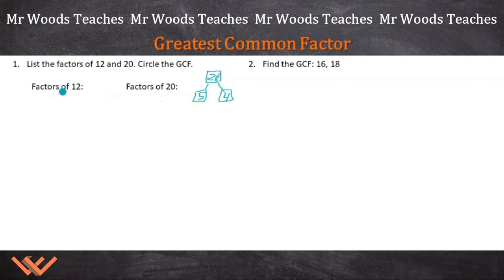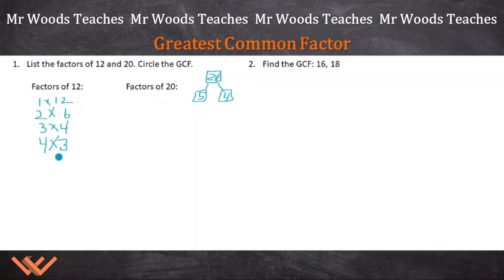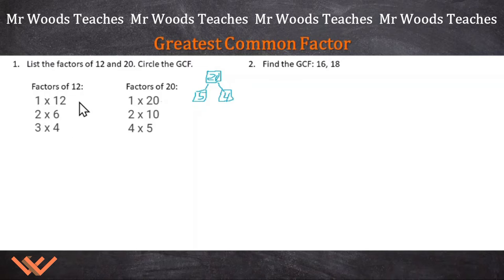Let's start with the factors of 12. I have 1 times 12, 2 times 6, 3 times 4. To make it more readable, I'll list them in order: 1, 2, 3, 4, 6, 12. Those are the factors for 12.